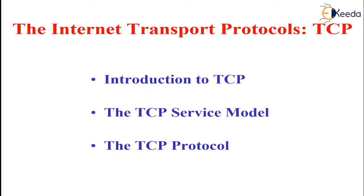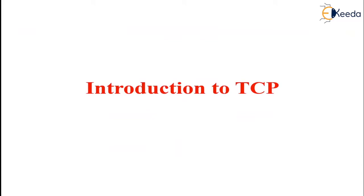The TCP protocol was specifically designed to provide a reliable end-to-end byte stream over an unreliable internet. TCP was designed to dynamically adapt to the properties of the internetwork and to be robust in the face of many kinds of failures. Each machine supporting TCP has a TCP transport entity, either a library procedure, a user process, or part of the kernel, which manages TCP streams and interfaces to the IP layer.